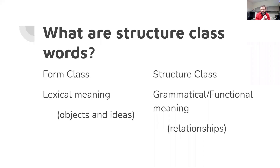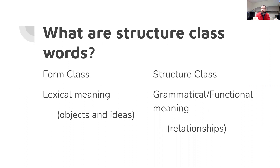So what are structure class words? We've already talked about form class words — that form class words have the majority of the lexical meaning of a sentence. In other words, a form class word we can more easily identify with an object or an idea, whereas structure class words have more of the grammatical or functional meaning in sentences. Structure class words tell us about relationships between words.